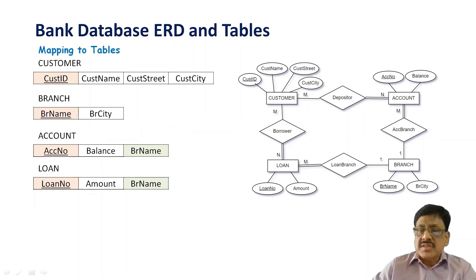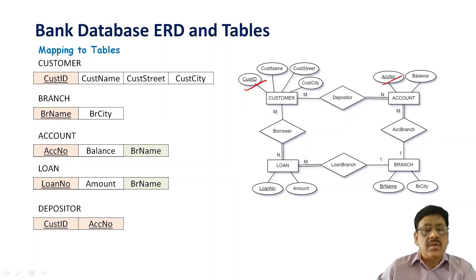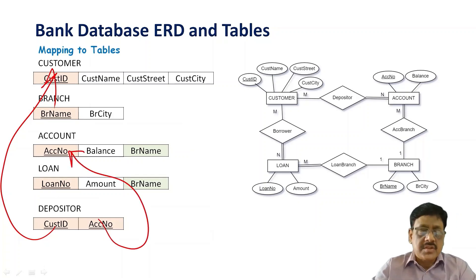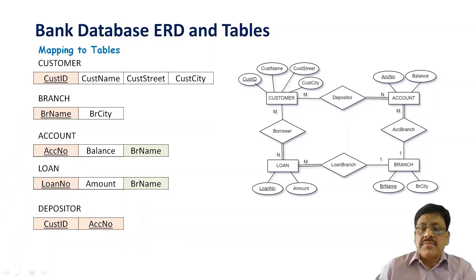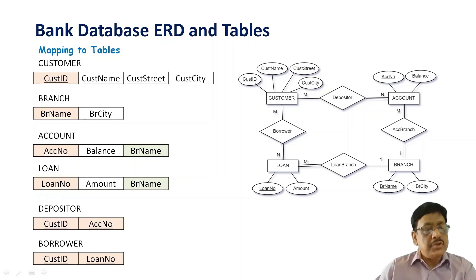Coming to the depositor — since it is a binary many-to-many, we have to create a relation for the relationship set called depositor. We have to include the primary key of both entity sets: customer ID and account number. Collectively they define the primary key for depositor, but individually they are the foreign keys — customer ID references customer ID of customer, and account number references account number of account. Similarly for borrowers, you create a relation and include customer ID and loan number. Collectively they define the primary key for borrower, but individually they are the foreign keys.